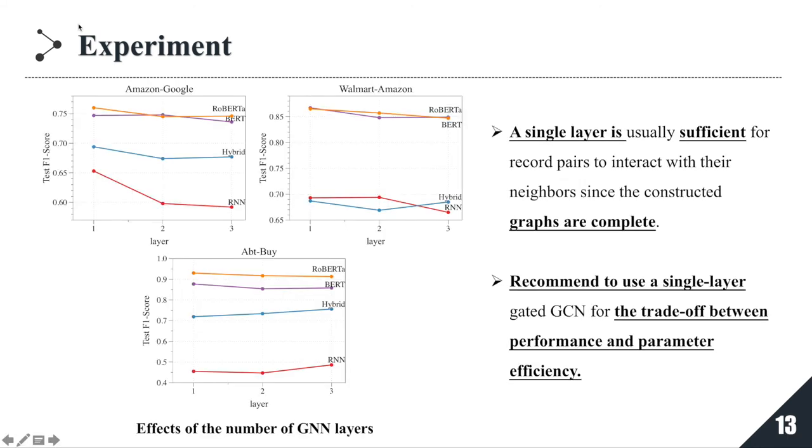To investigate the effects of the layer number of graph neural network, we set layer number to 1, 2, 3 respectively and the results are shown in the figure. We can observe from the performance curves that a single layer is usually sufficient for record pairs to interact with their neighbors, since the constructed graphs are complete. Increasing the number of GCN layers will bring in the over-smoothing problem, which may even cause performance degradation.